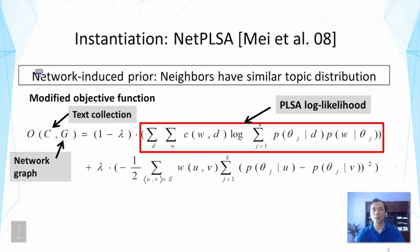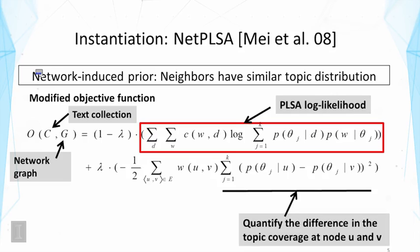If you look at it, you will see this part is precisely the PLSA log likelihood that we want to maximize when we estimate the parameters for PLSA alone. But the second equation shows some additional constraints on the parameters. In particular, we see here it's to measure the difference between the topic coverage at node u and node v, the two adjacent nodes on the network. We want their distributions to be similar. So here we are computing the square of their differences. And we want to minimize this difference. Note that there's a negative sign in front of this sum, this whole sum here.